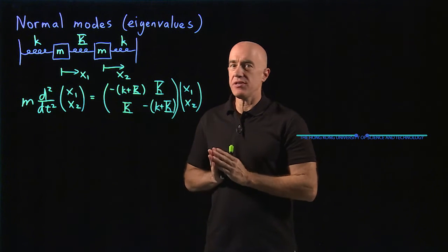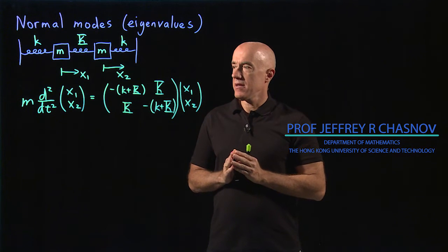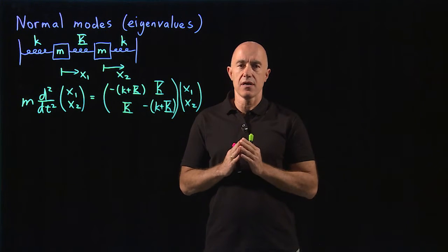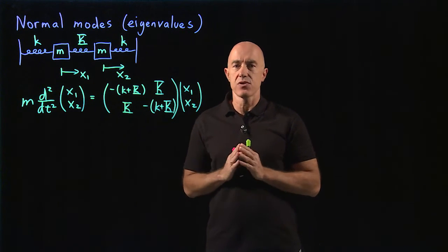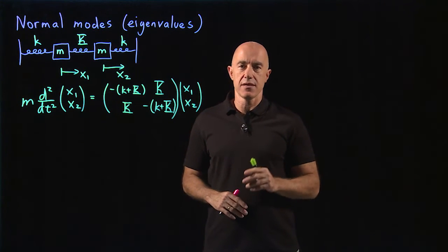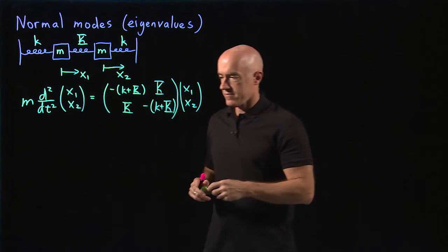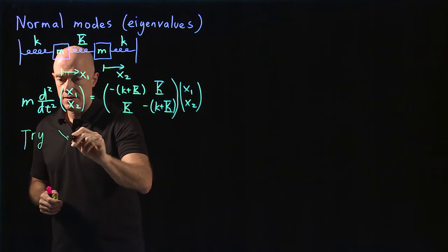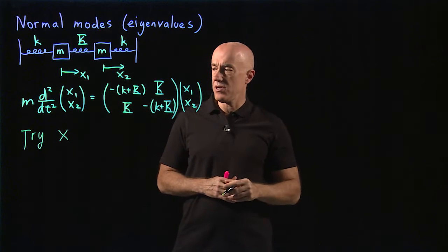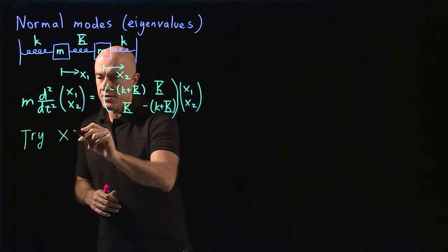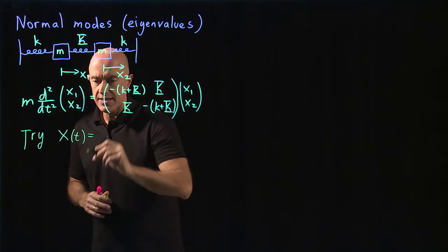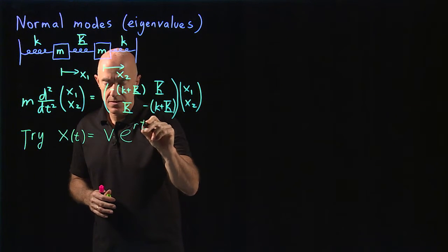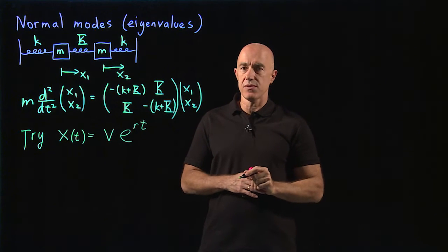We have the governing equations for this coupled oscillator problem. Let's try and solve them. This is different than the first order system we've been solving because this is a second order system, but the solution method is very similar. We're going to try an ansatz here. We're going to try x, which is a column vector x1, x2, as a function of time, and set this equal to a constant vector times e to the rt. That's the same ansatz we used previously.